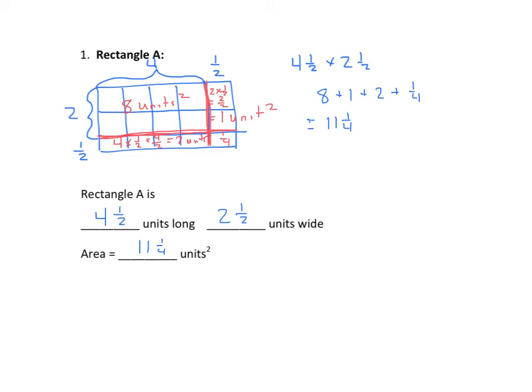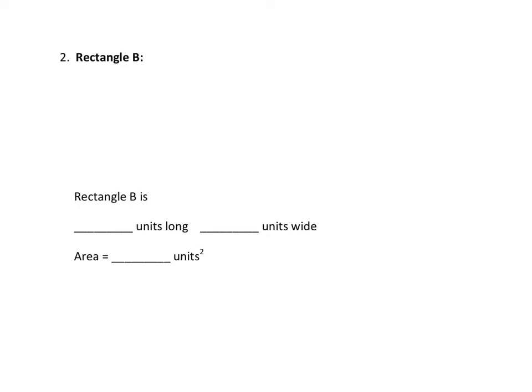Let's do some other examples where we're going to have the numbers, but we'll have to create the diagram from scratch. We now have another problem where we have the information in the sentences here. So we have 3 and 3 fourths units long and 1 and 3 fourths units wide, and we'll determine the area using our area model. So we'll draw our rectangle, and again we have 3, and I'm going to simplify this one a little bit, plus 3 fourths.